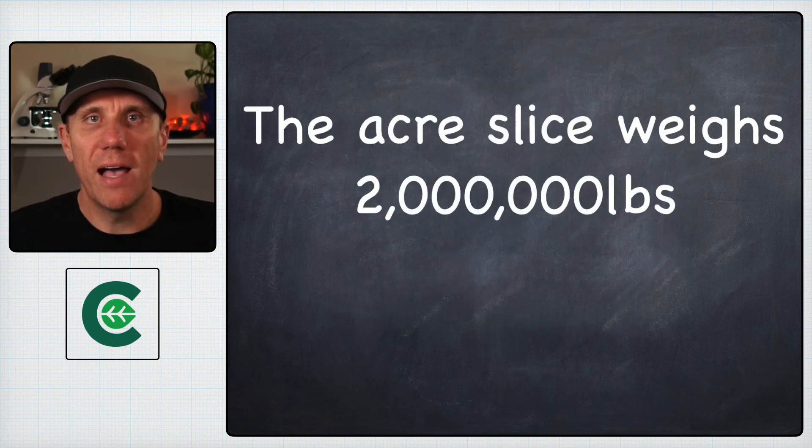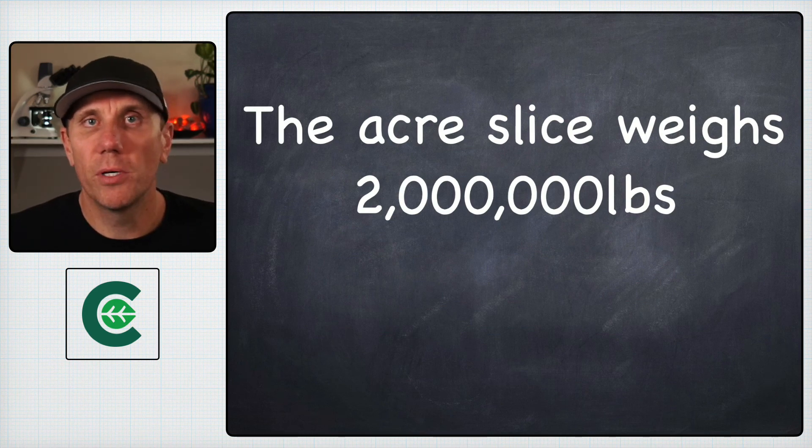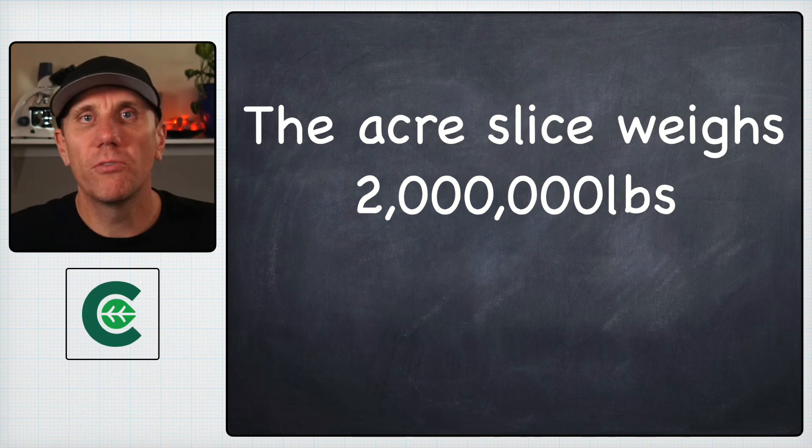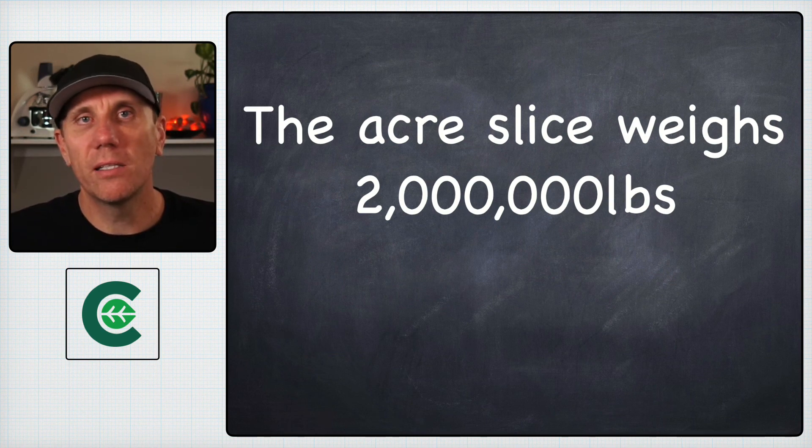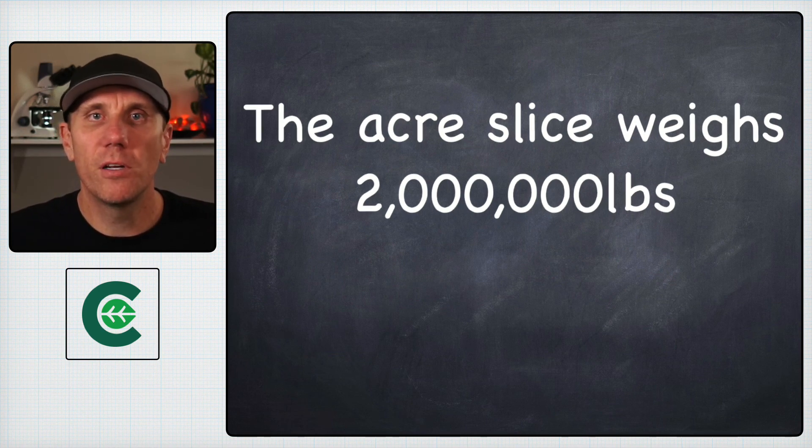If you're not getting a bulk density value, the consequences can be pretty drastic and the variance of your soil from this assumed two million pound acre slice can be quite significant. We can still take this two million pound value and turn it into a bulk density.